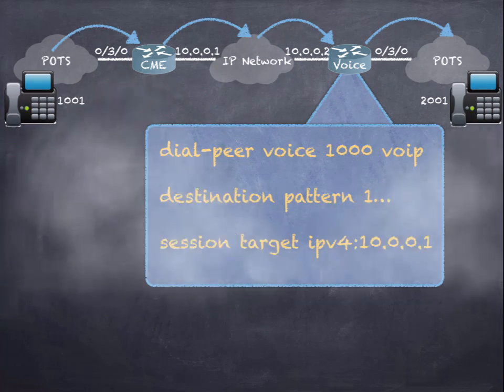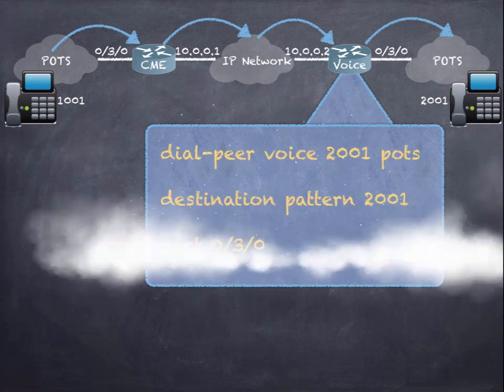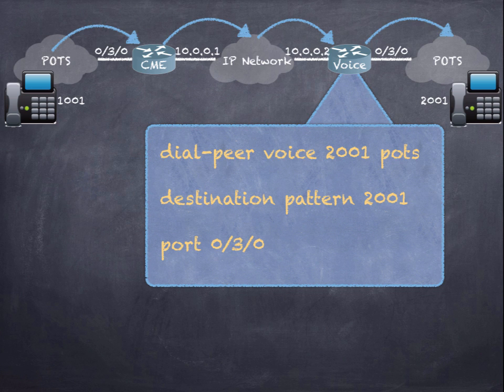On the voice router, we create a dial peer headed back to the left first — for the case where 2001 needs to call 1001. We create that destination pattern match and point it back to the CME router. Then, to complete the journey from 1001 to 2001, we use a dial peer that matches pattern 2001 and routes it out port 0/3/0, ringing the phone. So four dial peers are required to create the end-to-end round-trip call routing.